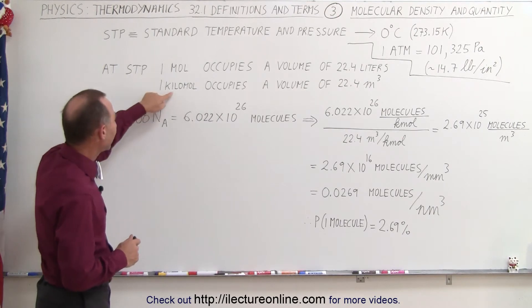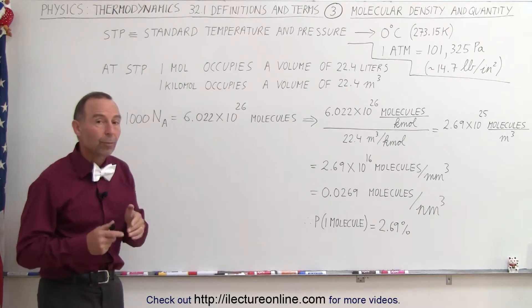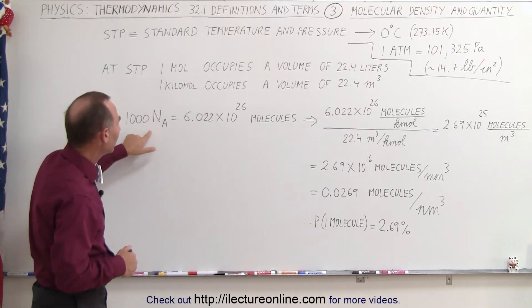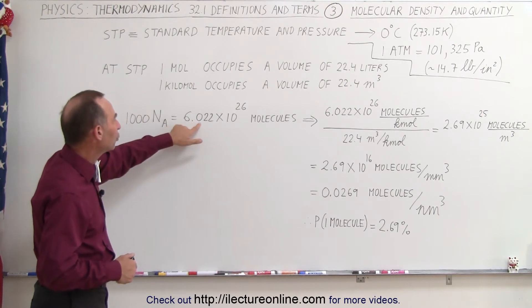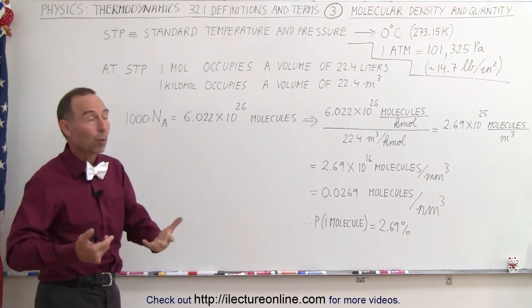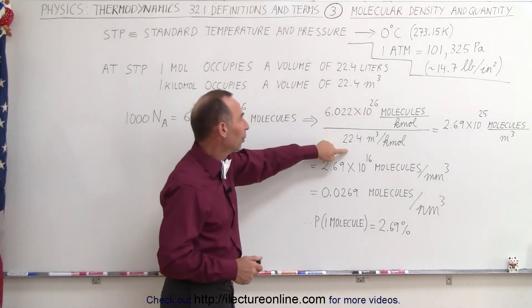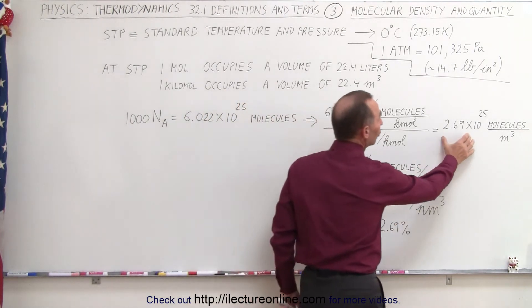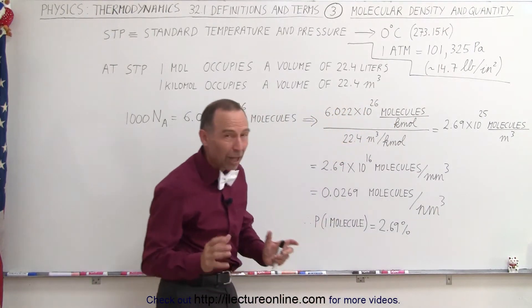So if we have a kilomole, then we have a thousand times Avogadro's number. N sub A is called Avogadro's number, and therefore, if we have a thousand of those, we have 6.022 times 10 to the 26th molecules — a thousand more than Avogadro's number. And if we divide that number by 22.4 cubic meters, we have this many molecules for every cubic meter of gas. That's a lot of molecules.